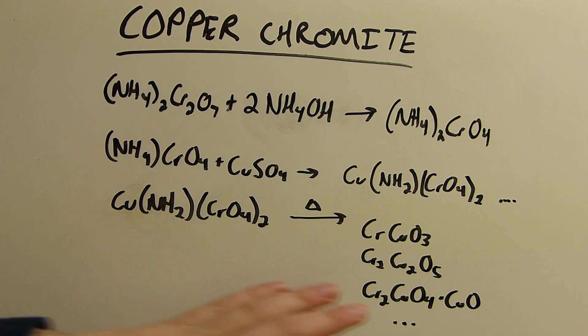There are actually many of those compounds and it's difficult to characterize the exact empirical formula of the copper chromite, so it's just used as a catalyst that's understood to be a mixture of a bunch of compounds. And the same thing goes for the intermediate copper ammonium chromate. It has many different chemical formulas, but that's approximately the empirical formula.